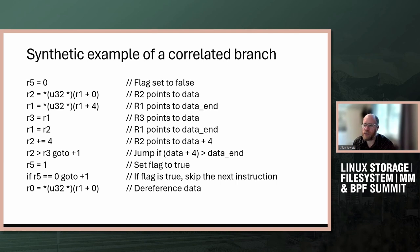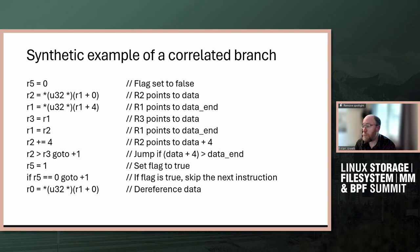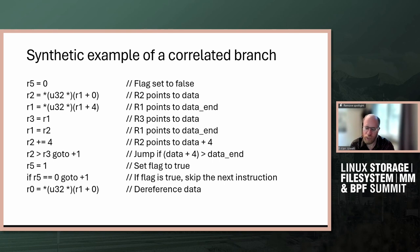Here's an entirely synthetic example. Assume this is just an XDP program — it's loading the beginning and end data, checks that R2 points to a block of memory at least four bytes long, subsequently sets a flag, and then if that flag is true, accesses the memory. This is safe, but the challenge is that when the verifier is assessing the second branch, it has no knowledge that this branch is always going to be true if the previous branch was true.